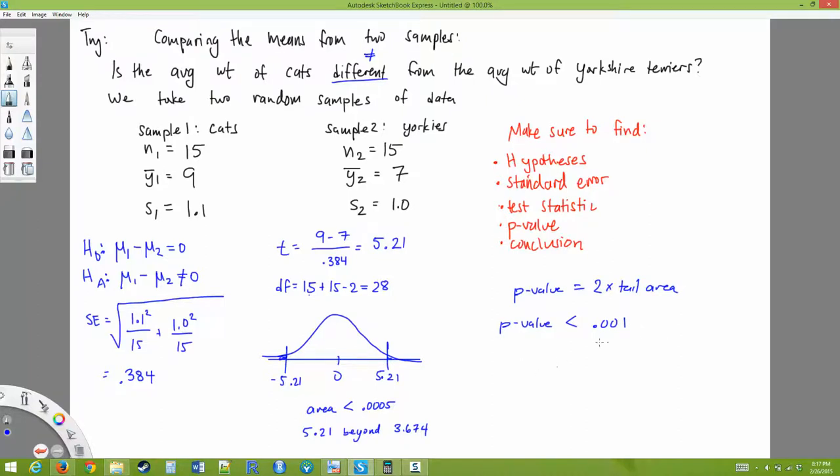Okay, so my p-value is less than 1 in 1,000. So if I take two random samples of animals, and if the respective populations have the same mean, what's the probability that I would get a sample where one has a mean of 7 and the other has a mean of 9? The probability of that happening by random chance is less than 1 in 1,000.